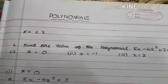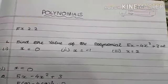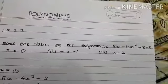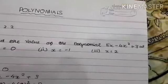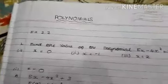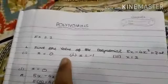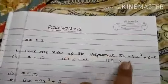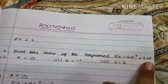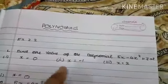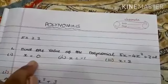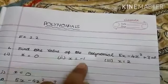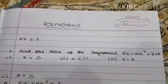Polynomials chapter, Exercise 2.2: find the value of the polynomial 5x minus 4x square plus 3, at x equals 0, x equals minus 1, and x equals 2. So here we should find the value of this polynomial in three different sub-questions where the value of x is different. So let's find it out.